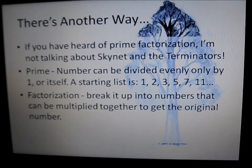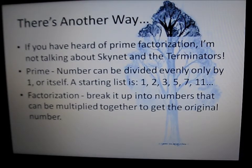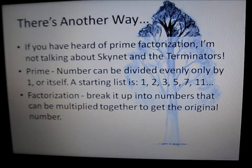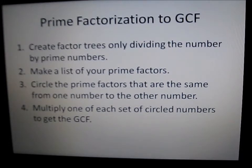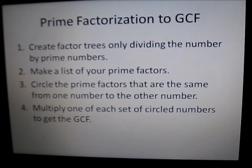There's another way. If you have heard of prime factorization — a prime number can be divided evenly only by 1 or itself. A starting list of prime numbers: 1, 2, 3, 5, 7, 11. Factorization is breaking a number up into numbers that can be multiplied together to get the original number. To use prime factorization to find the GCF, create factor trees dividing only by prime numbers, make a list of your prime factors, circle the prime factors that are the same in both numbers, and multiply one of each set of circled numbers to get the greatest common factor.